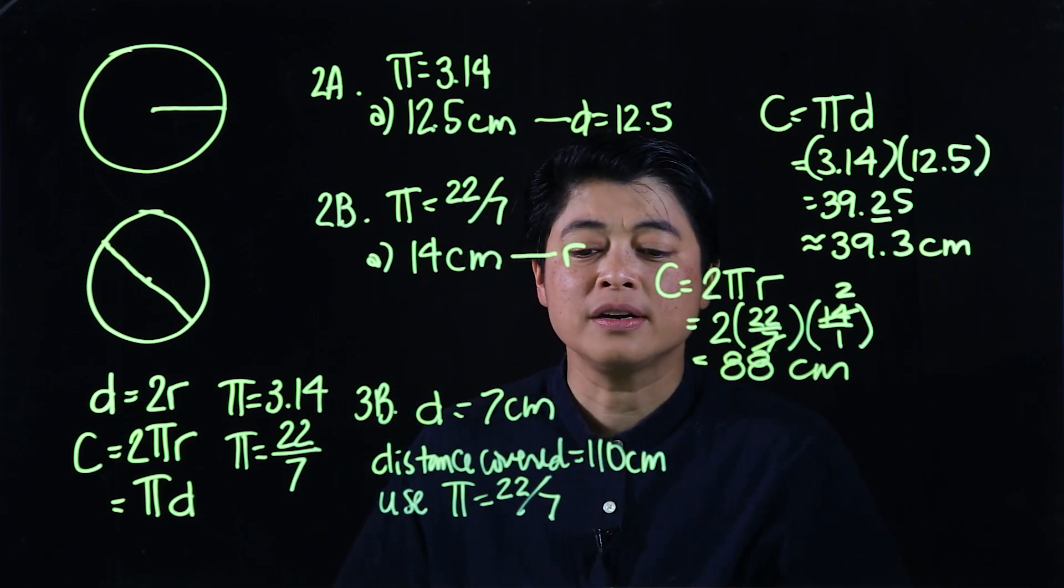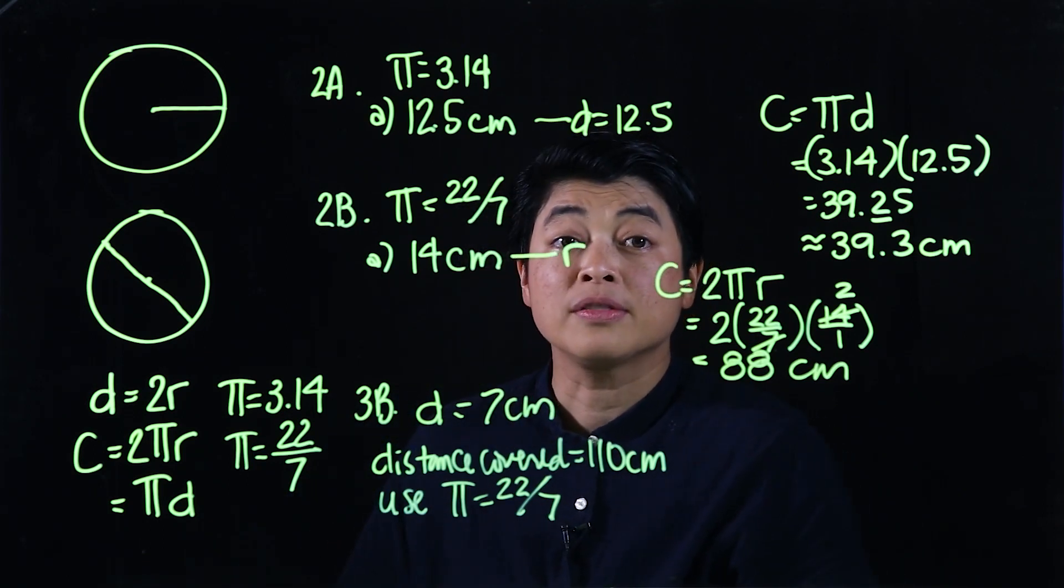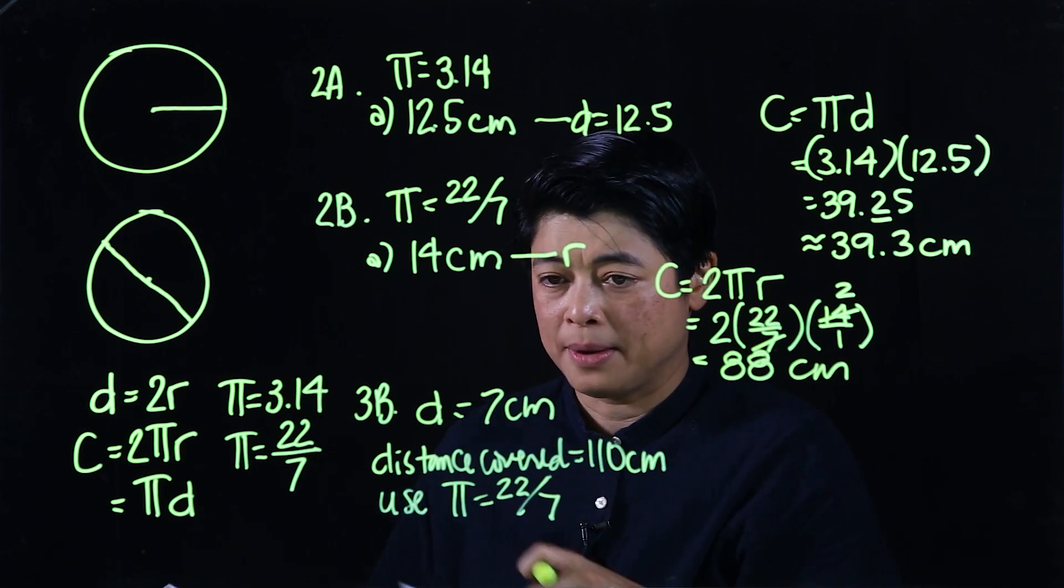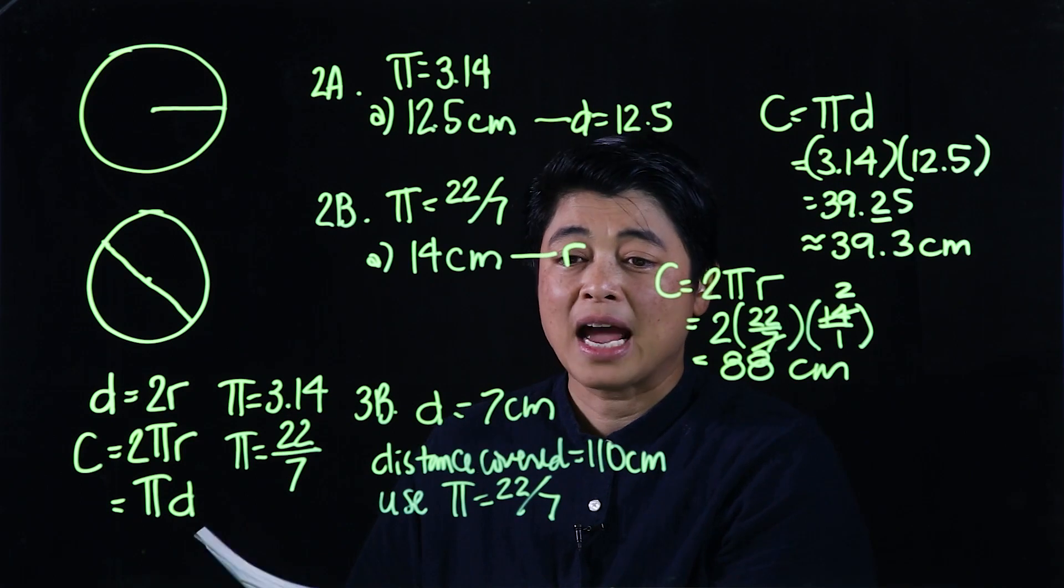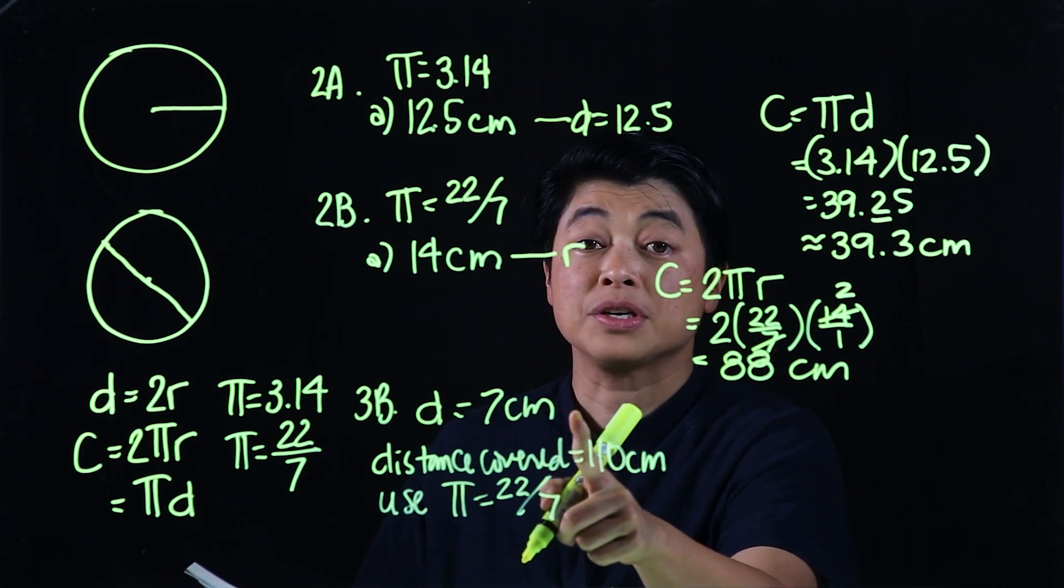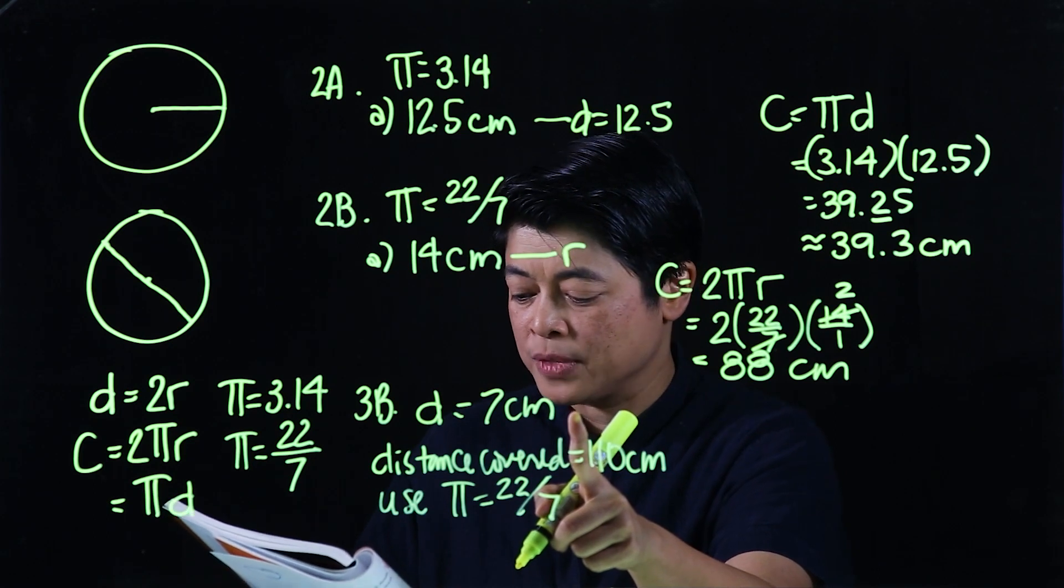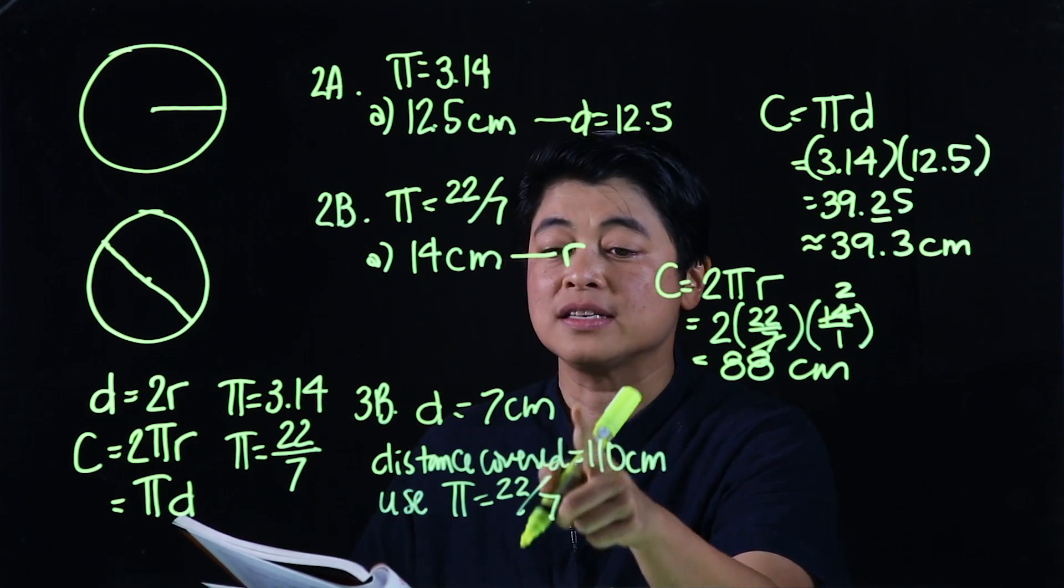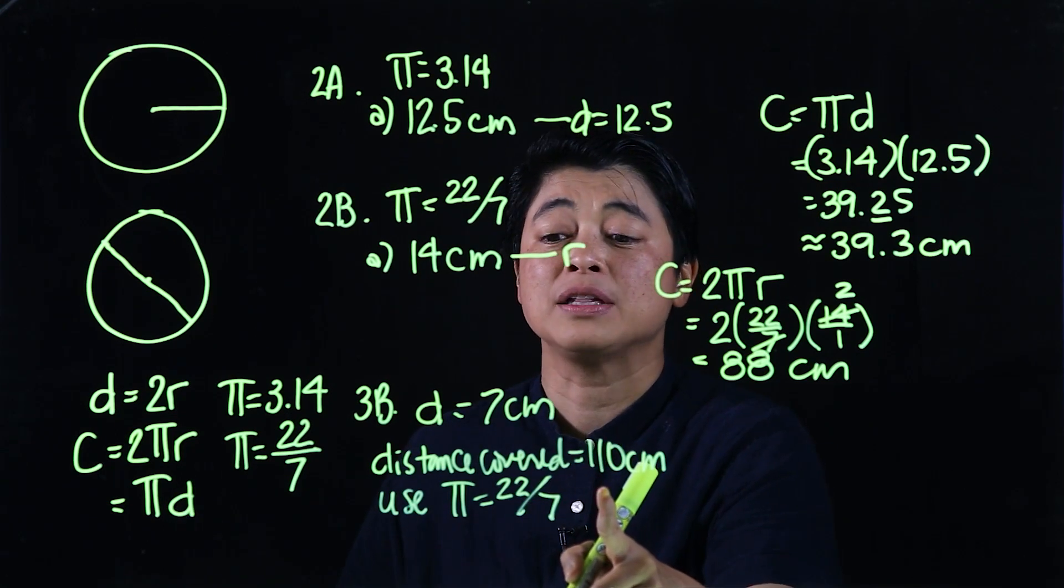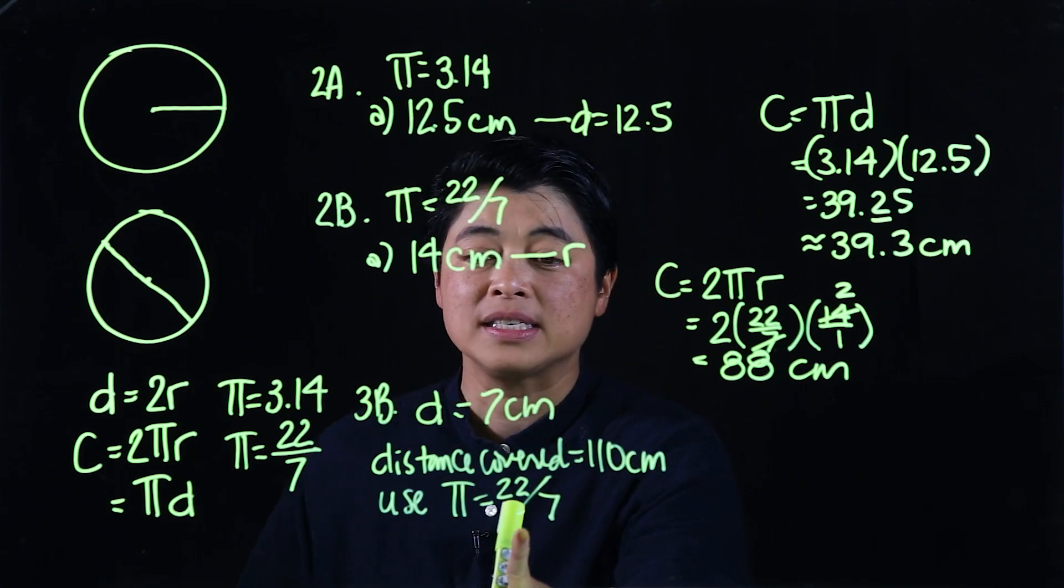In page 144, the problem says: a circular lid has a diameter of 7 centimeters. Question is, how many complete turns must it make to cover a distance of 110 centimeters? And they want us to use 22/7.